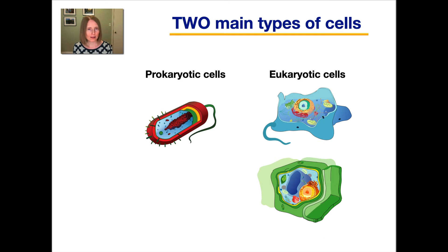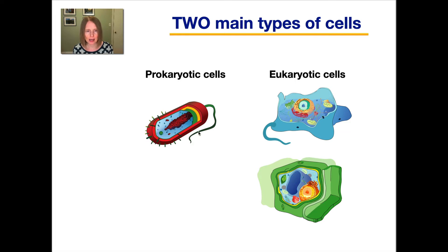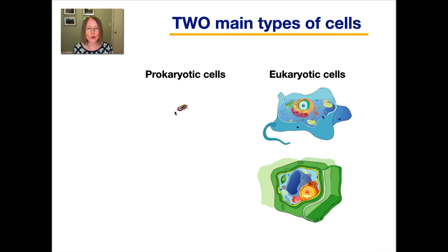So all cells on earth can be categorized into two major types: prokaryotic cells and eukaryotic cells. Based on these illustrations, eukaryotic cells have a lot more different structures in them than prokaryotic cells, so they are much more complex. Additionally, if I made these illustrations more to scale, prokaryotic cells are much, much tinier than eukaryotic cells.